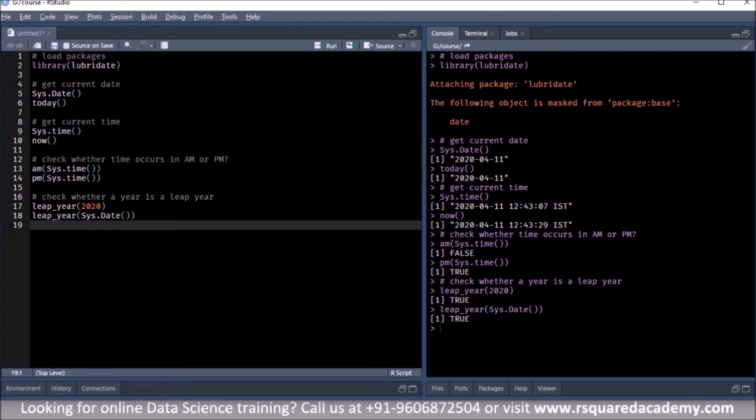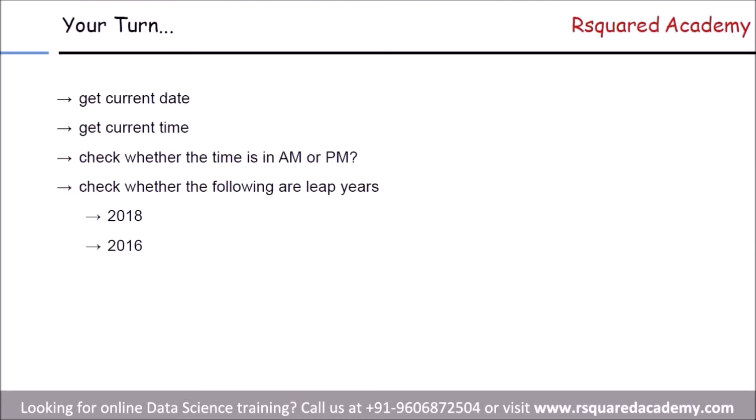These are the basic functions before we move on to more intermediate and advanced topics. Now we have a few practice questions: get the current date, get the current time, check whether the time is AM or PM, and check whether 2018 and 2016 are leap years. These questions use the same functions we just covered. The practice questions are in a PDF file in the learning management system, and solutions are provided in an R script — try answering them first, then compare.